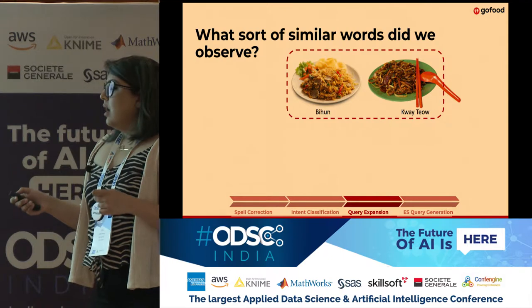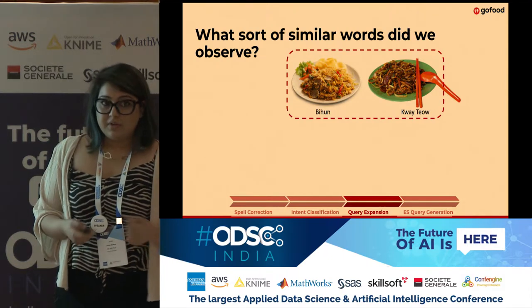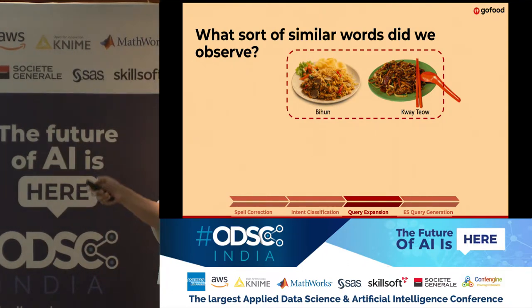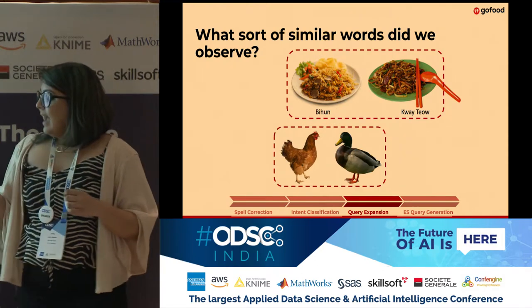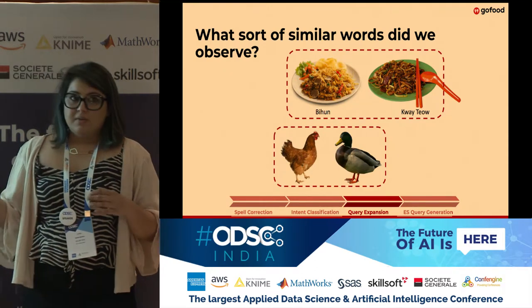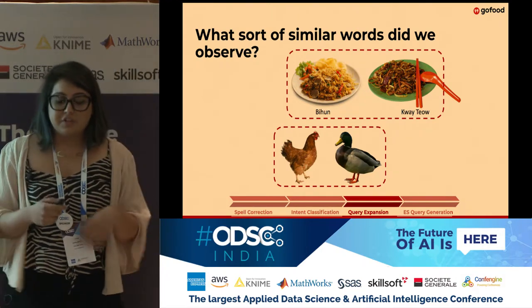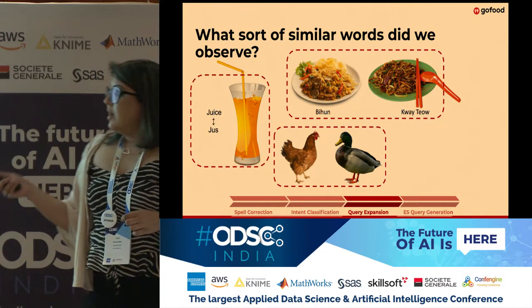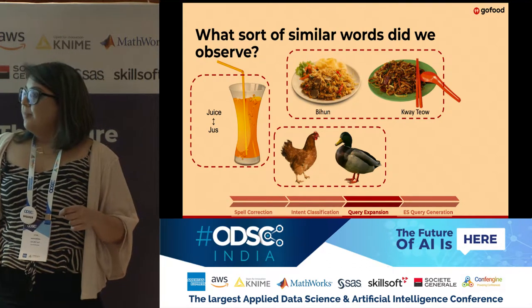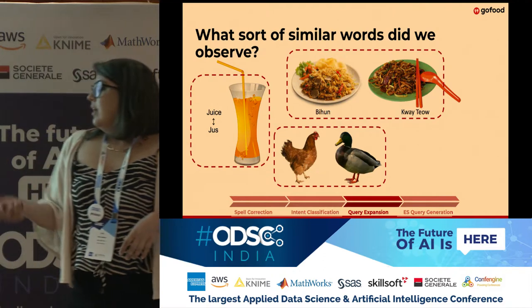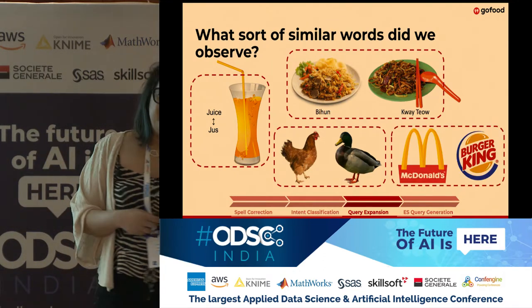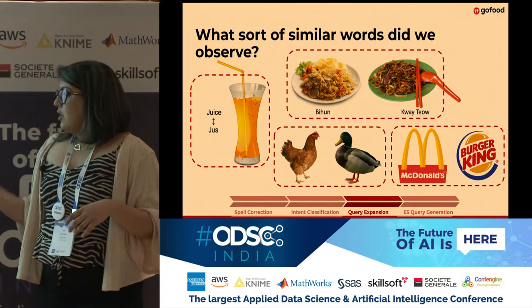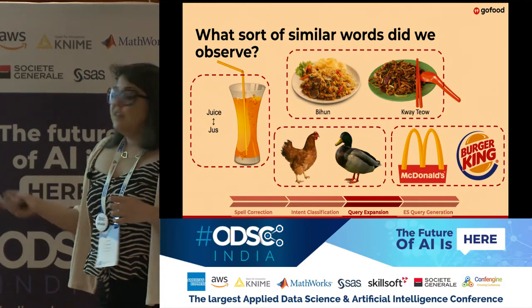Let's look at some expansion examples. 'Bihun' and 'kueh tiau' are two different types of popular noodles, and the algorithm determined them to be expansion terms of each other. 'Chicken' and 'duck' were also identified as expansion terms, since they are used interchangeably in many Indonesian dishes. 'Juice' and 'jus' (the Indonesian word for juice) were identified as a translation expansion pair. And we were quite pleased to see that McDonald's was the word vector closest to Burger King — an association between similar brands.